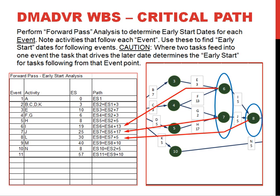Notice that circles 6, 7, and 8 are highlighted because multiple tasks feed into those events. Following event 3 with task E — early start date of 10 plus duration of 3 — gives an early start of 13 for event 6. But event 4 with task F has an early start of 6 and duration of 13, giving 19 days. Since 19 is later in the project than 13, that is the early start date used for event 6.